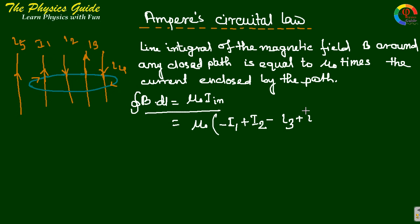I4 creates a magnetic field that coincides with the loop direction, so this is plus. I5 is situated outside the loop, so we do not include this in this formula.